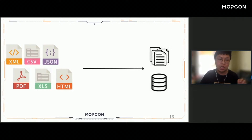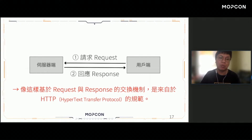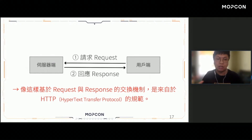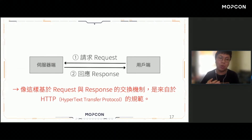自動化可以幫助我們節省掉日常繁瑣的工作，讓我們更專注在想要解決的問題當中。整個資料爬蟲想要做的事情，就是把來自於網路當中不同格式的資料——可能是XML、CSV、JSON、Excel、HTML——把它下載跟儲存到我們的本地端當中。那如何把資料從網路當中下載到本地端呢？這邊我們其實會基於request跟response的交換機制，來自於HTTP的規範。